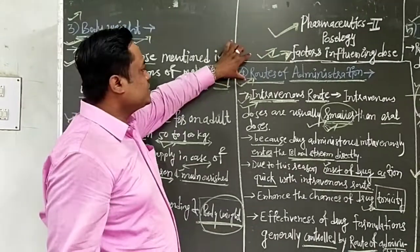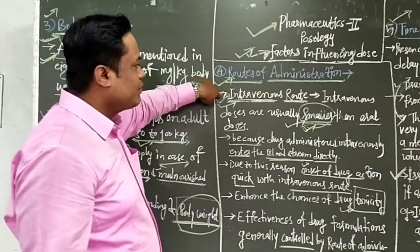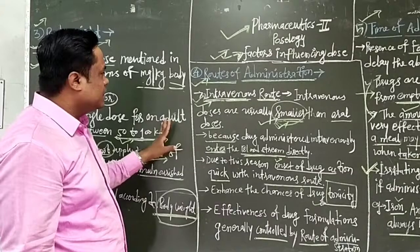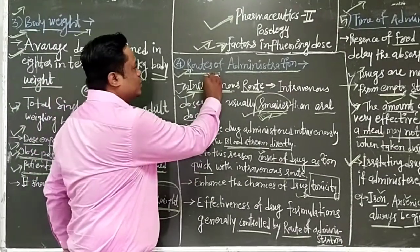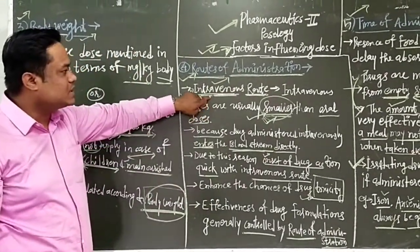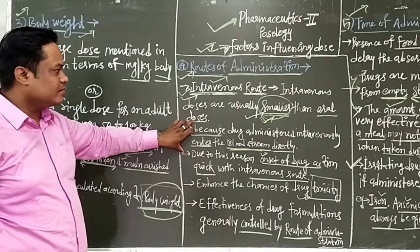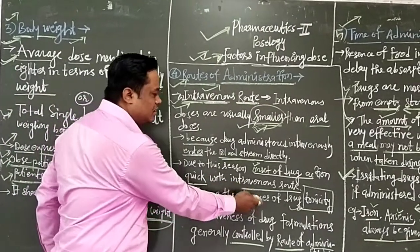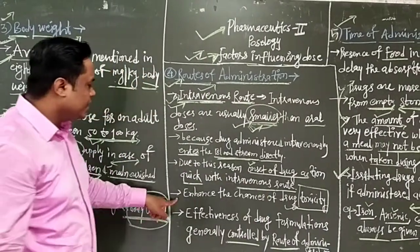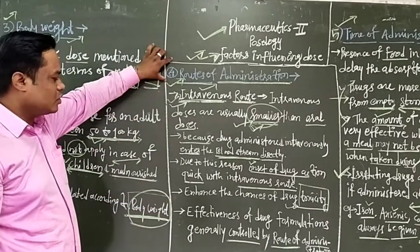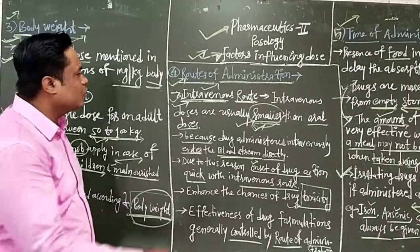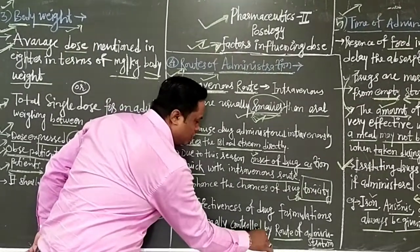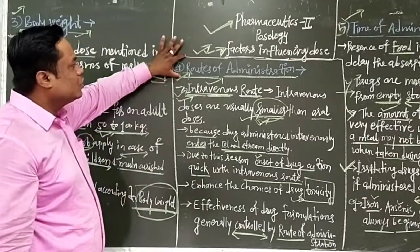The second factor is route of administration. For example, in case of intravenous routes, the dose required is very small compared to oral route of administration. When intravenous routes are given, the drug directly goes to the systemic circulation, and onset of action is very fast. But at the same time it enhances drug toxicity in the patient. Therefore, the effectiveness of drug populations is generally coupled with the route of administration — onset of action can be fast or slow depending on the route.